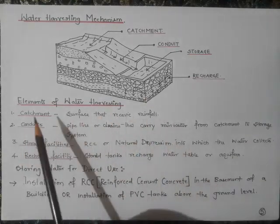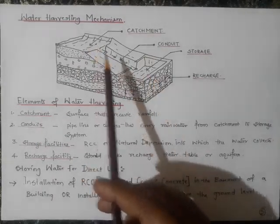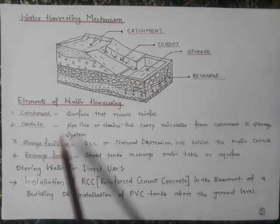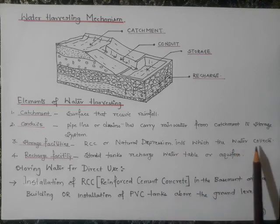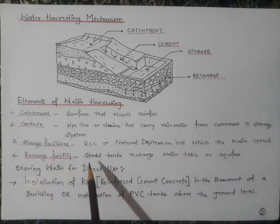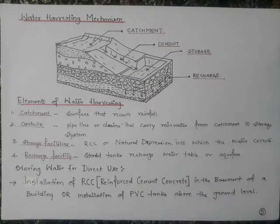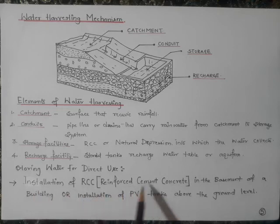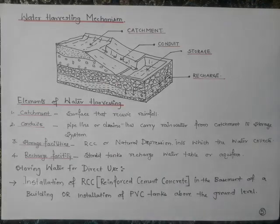The elements of rainwater harvesting are: first, the catchment; second, the conduit, which redirects water into storage facilities made of reinforced concrete or a natural depression; third, recharge facilities — storage tanks that allow water to seep into an aquifer. Installation of reinforced cement concrete in basements of buildings or PVC tanks above ground level to store rainwater are effective methods for conservation of water.